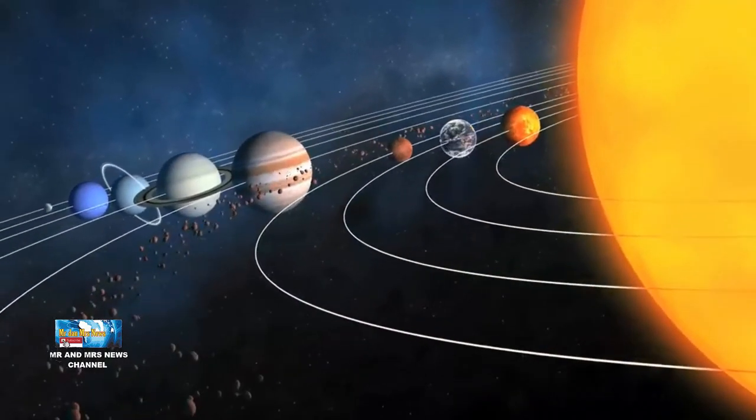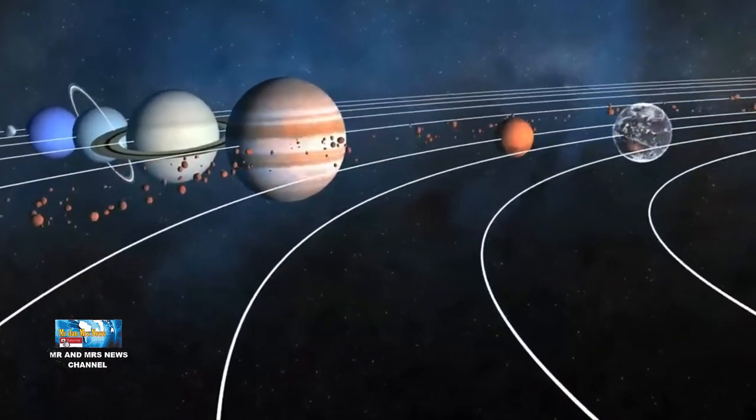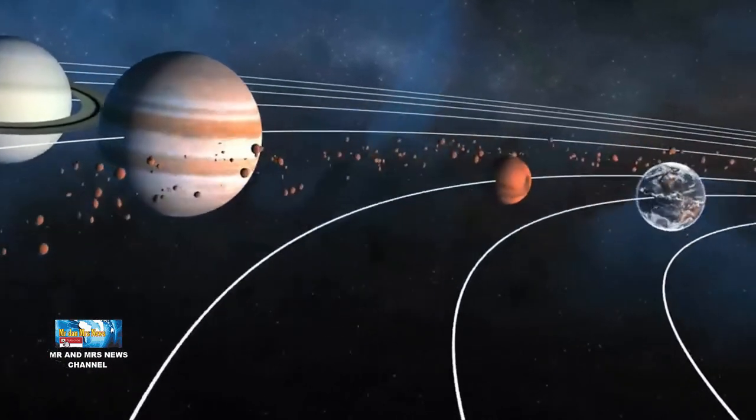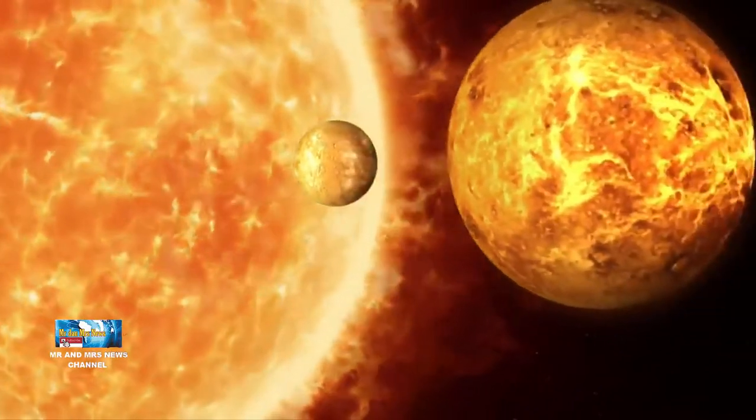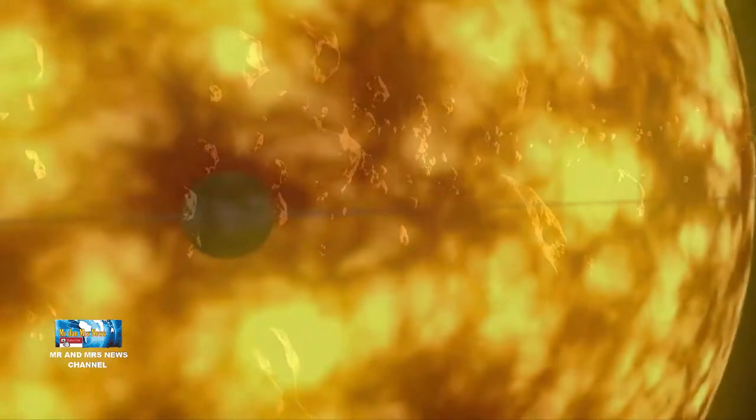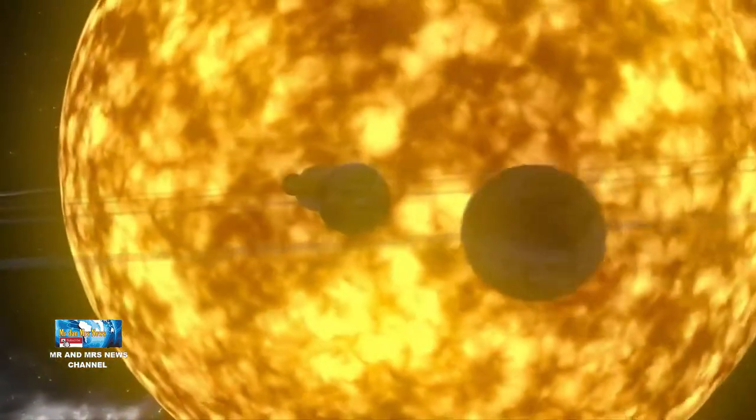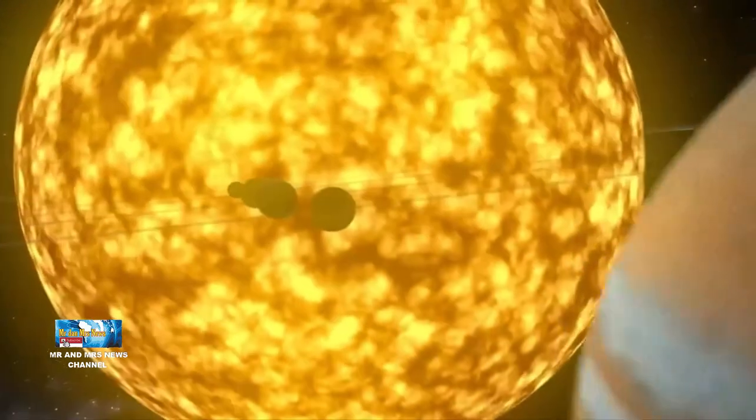Bagaimanapun, alasan dasar mengapa planet-planet berputar mengelilingi atau mengorbit matahari adalah karena gravitasi matahari membuat mereka tetap pada orbitnya. Sama seperti bulan mengorbit Bumi karena tarikan gravitasi Bumi, Bumi mengorbit matahari karena tarikan gravitasi matahari.